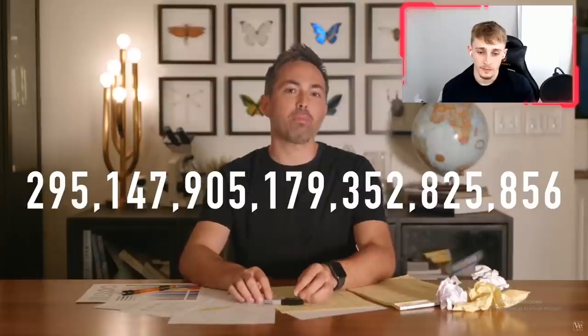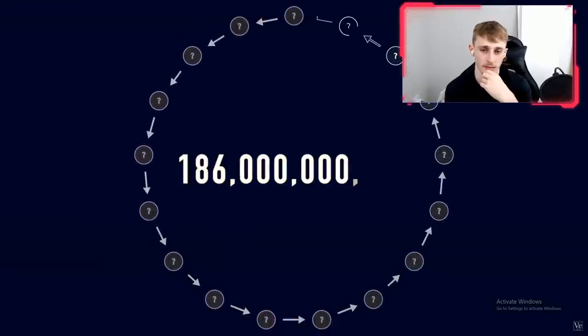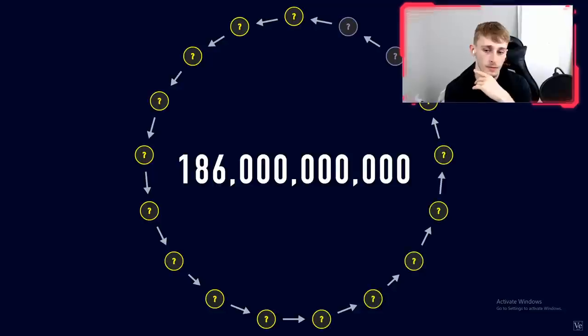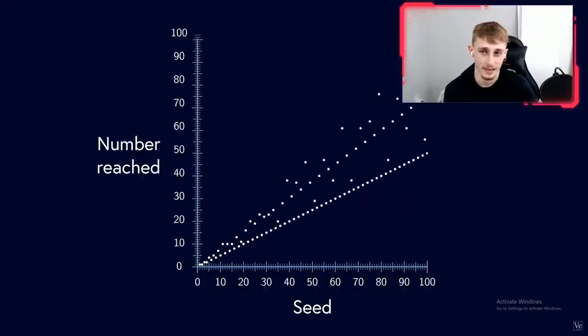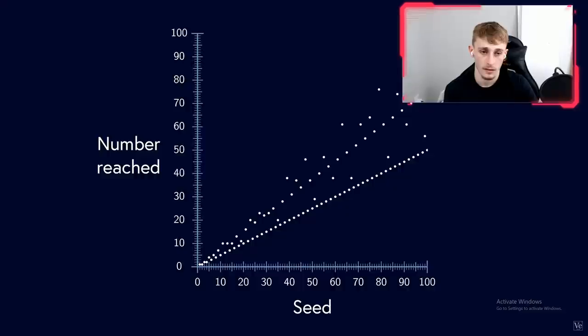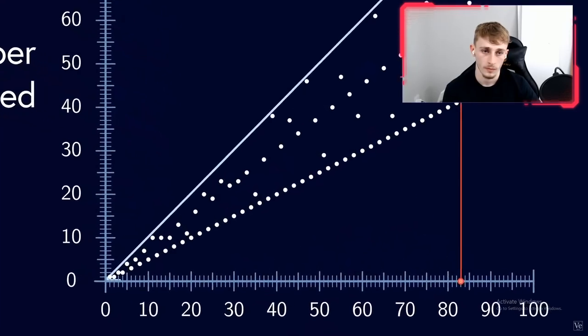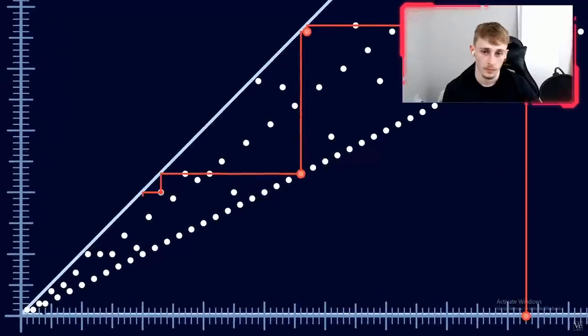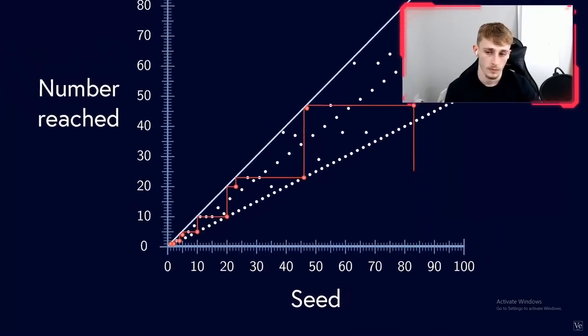We have tested nearly 300 quintillion numbers, and none of them disproves the conjecture. In fact, given this information, mathematicians calculate that any loop other than 4-2-1 must be at least 186 billion numbers long. So it seems pretty likely that the conjecture is true, but this doesn't prove it. One way mathematicians have attempted to prove it is by making a scatterplot with all the seed numbers on the x-axis. If you can show that in every 3x plus 1 sequence there is a number smaller than the original seed, you have proven the Collatz conjecture.